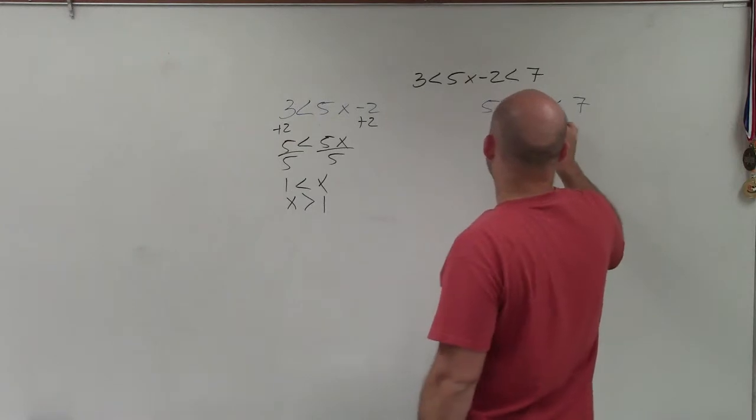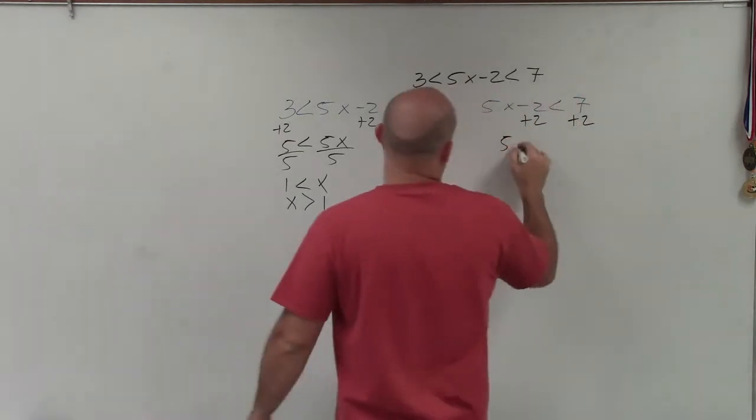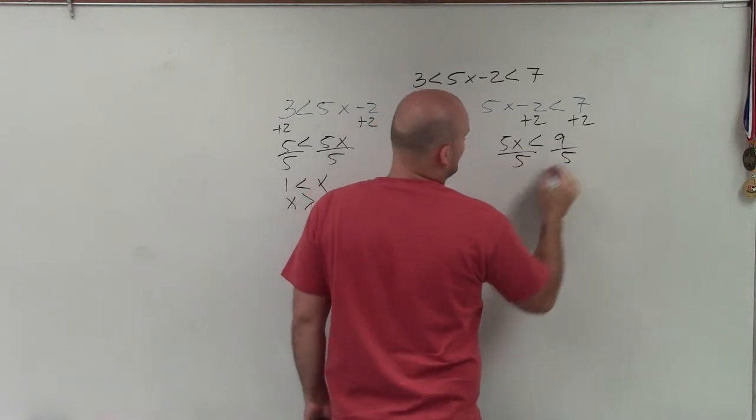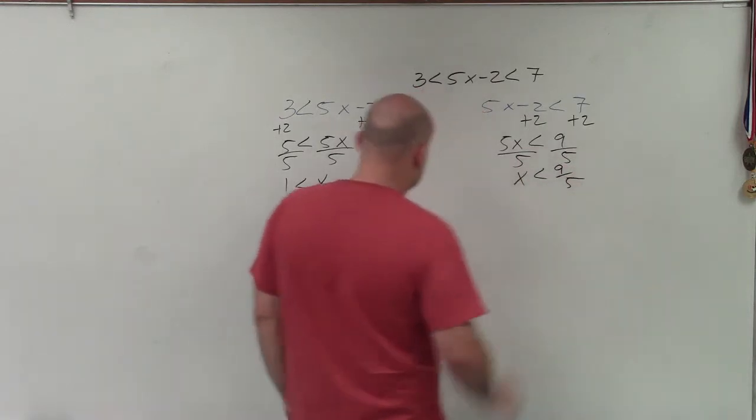In this case, I need to add 2 to both sides. Then I have 5x is less than 9, divide by 5, divide by 5. So x is less than 9 fifths.